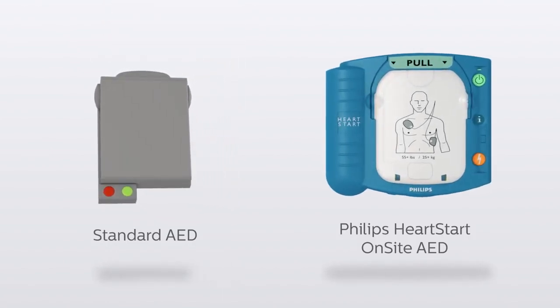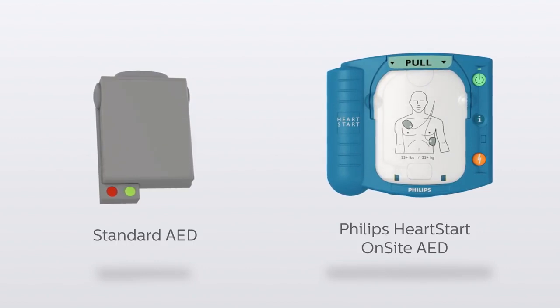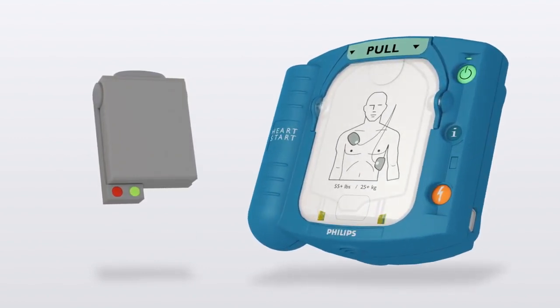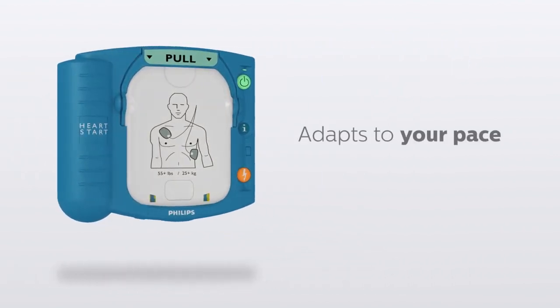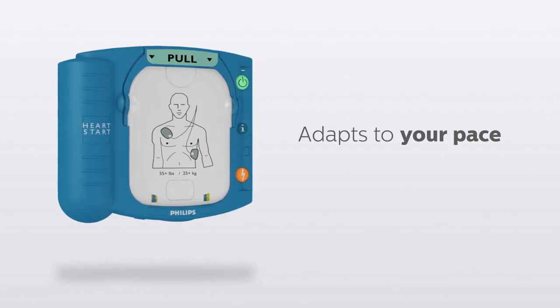The Philips HeartStart Onsite uses a clean and simple interface with intelligent sensors to detect the exact step the user is on and adapt instructions to the pace of the user so as not to overwhelm, run ahead, or slow them down.